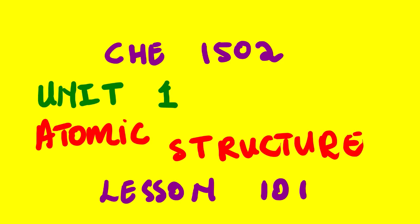Our lesson for today will be based on Chemistry 1502, that is General Chemistry 1B, also known as Organic Chemistry. The focus for today's topic will be under Unit 1 in your study guide, and we will be looking at the most basics of chemistry, which is the atomic structure. This is Lesson 101.